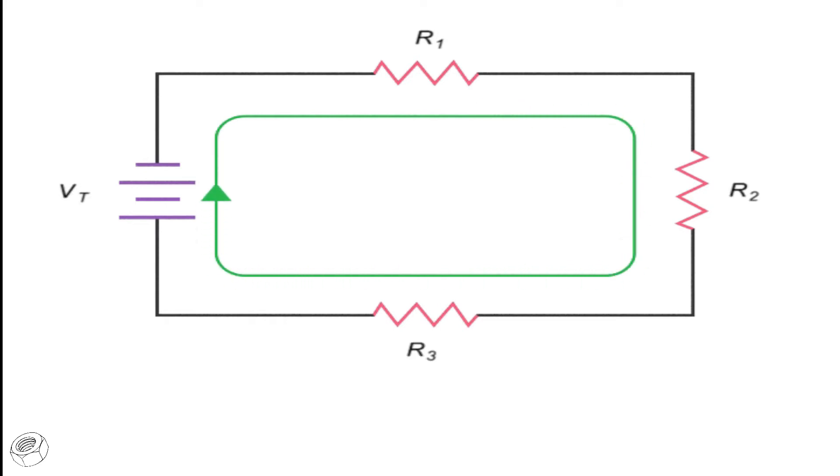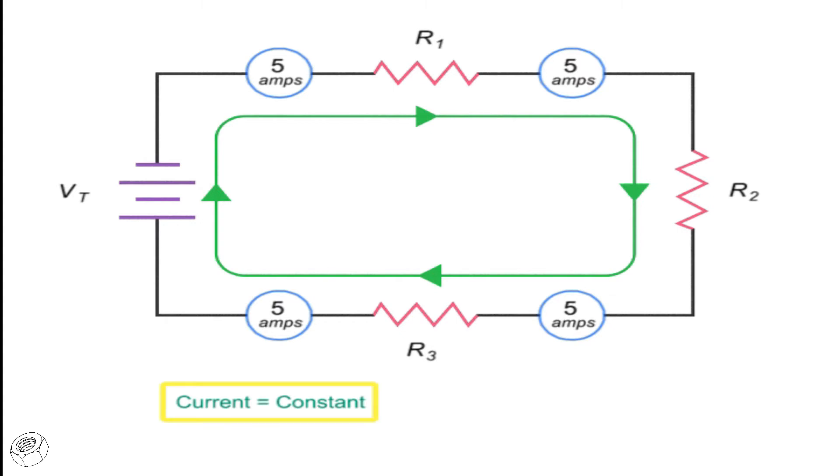For instance, if the source current in a series circuit is 5 amps, then no matter where along the circuit you take an ammeter reading, it will also register 5 amps. Although current is constant throughout a series circuit, voltage is not.